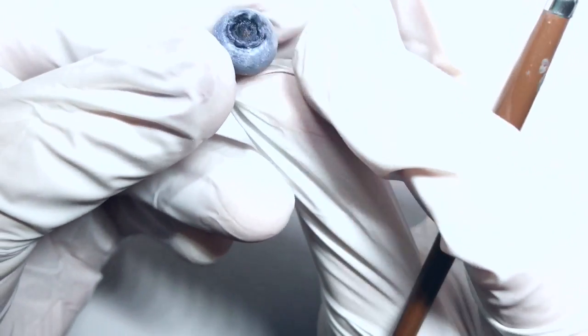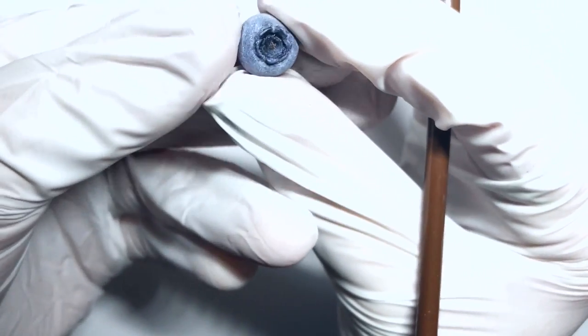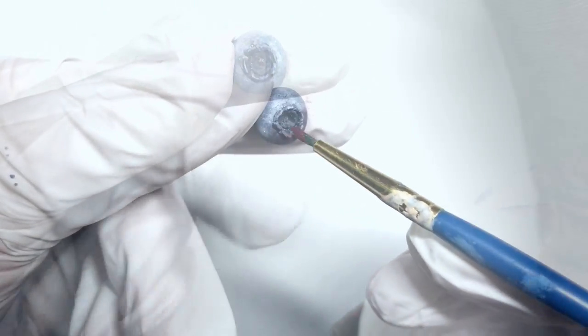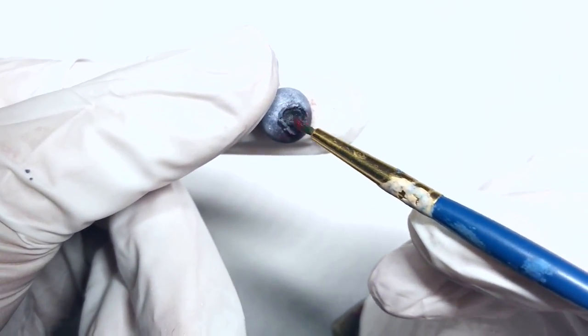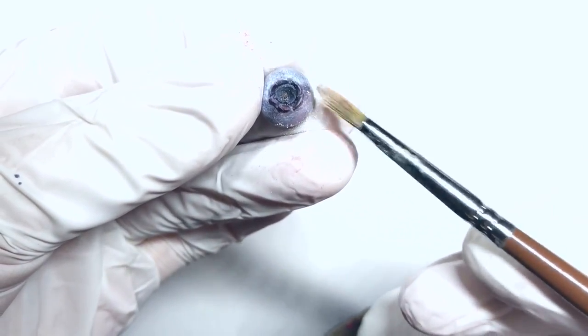Pause here and there while you're working to very softly go around and pinch the blueberry into that lovely blueberry shape again. Dust with the red just in some places, and then go over the red with the white.